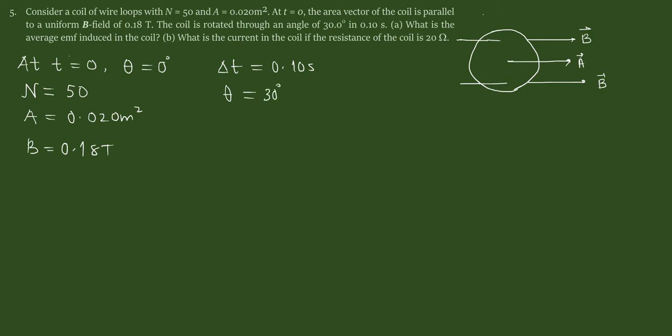Okay so we are rotating this loop so that, that's the magnetic field, so that the area vector makes an angle of 30 degrees with this B.